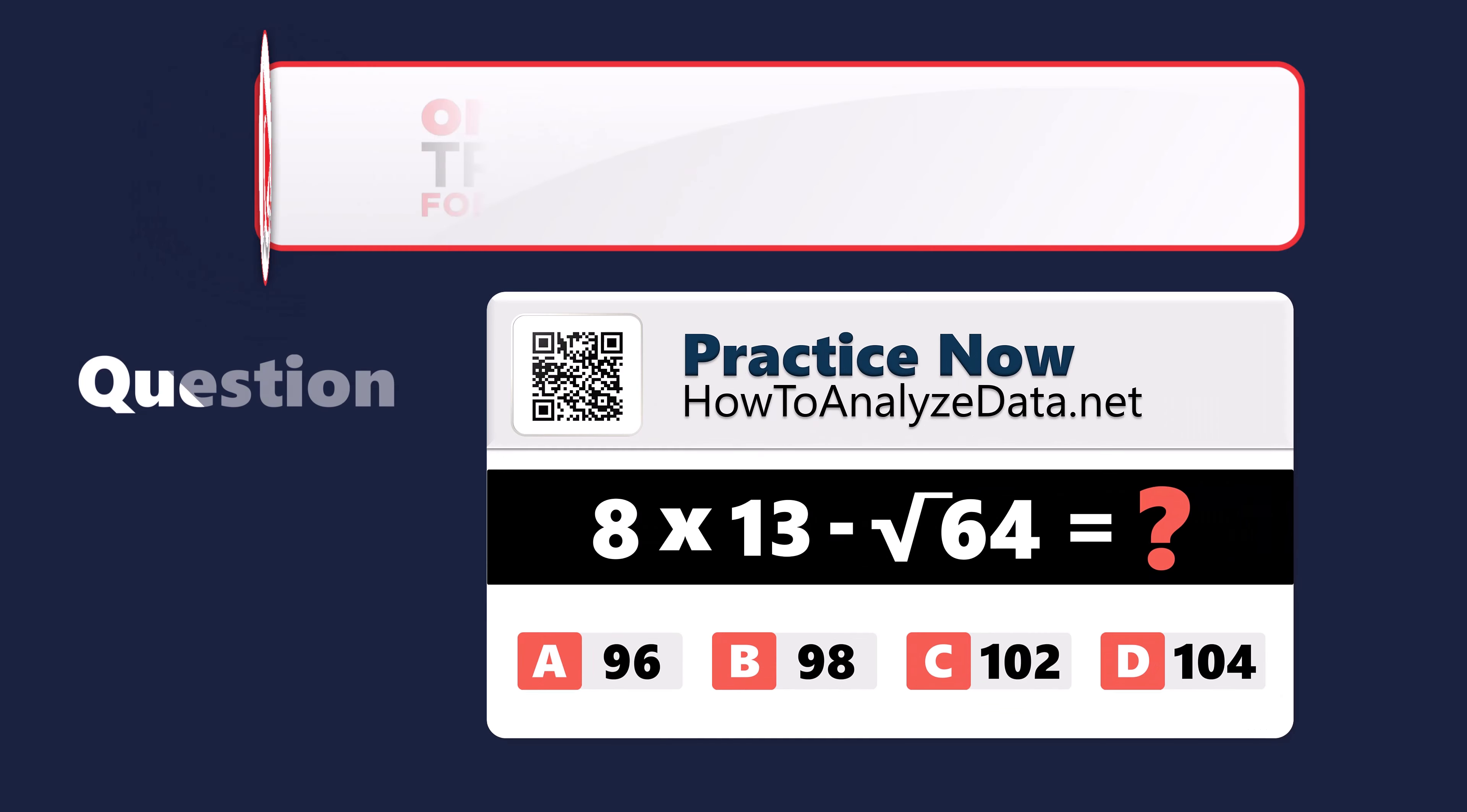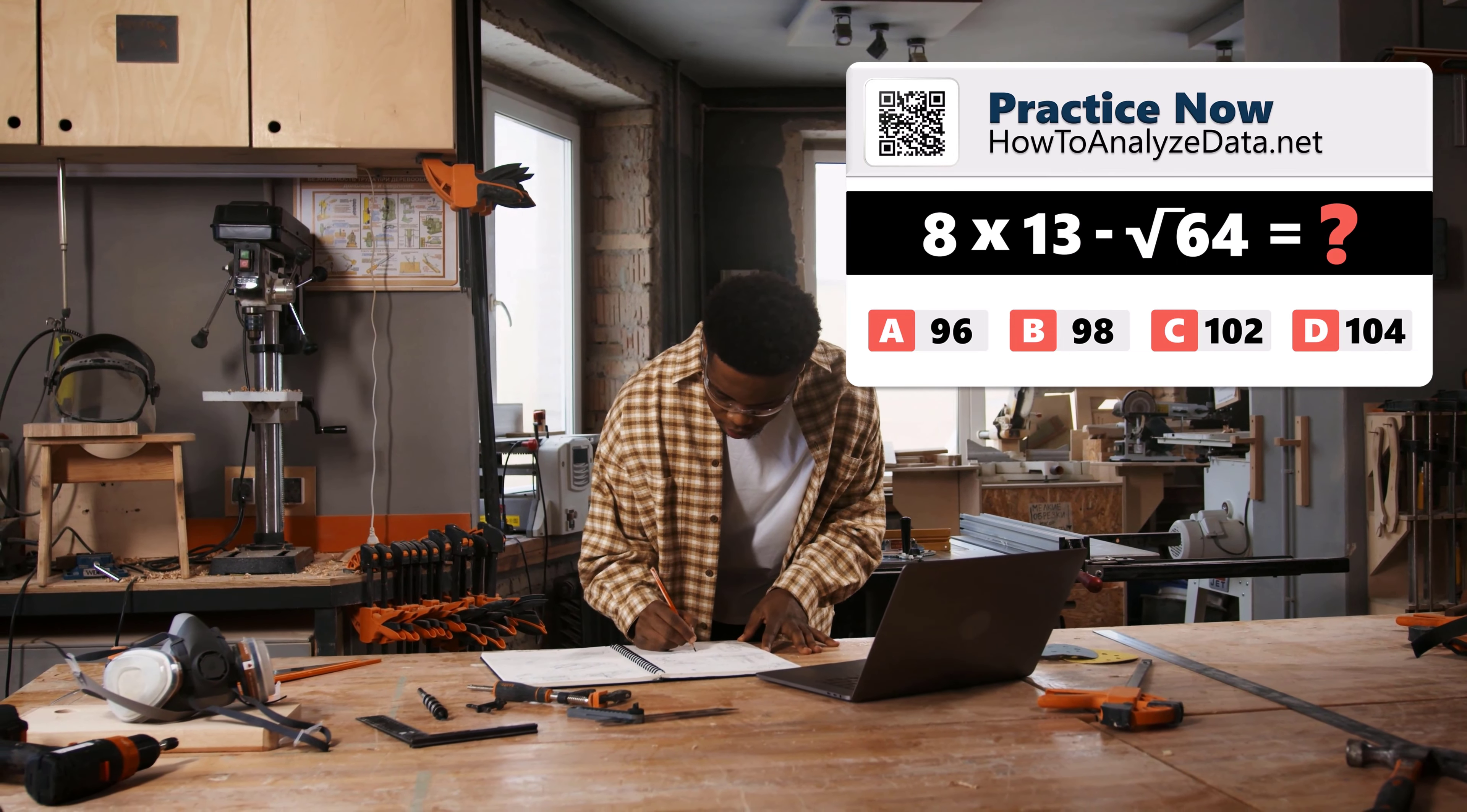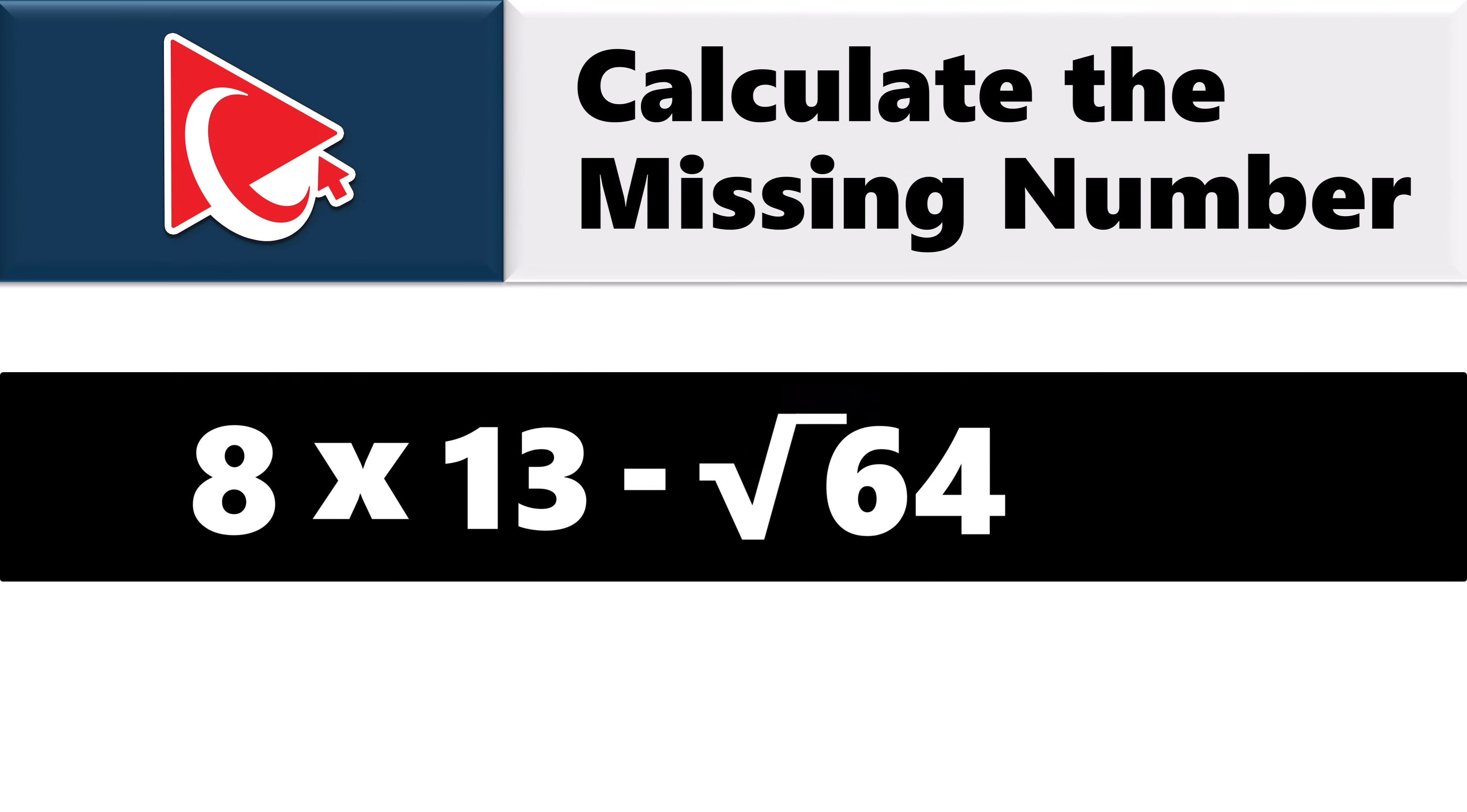This particular test question is very tricky, but through the simplicity. Understanding this question is like trying to assemble IKEA furniture without the instructions. Sure, it might work eventually, but expect a few leftover screws and a sense of confusion. You are presented with the equation 8 multiplied by 13 minus square root of 64.